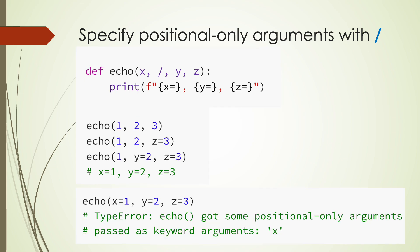And if x is passed as a keyword argument, a type error will be raised, which says echo got some positional only argument passed as keyword arguments for argument x.